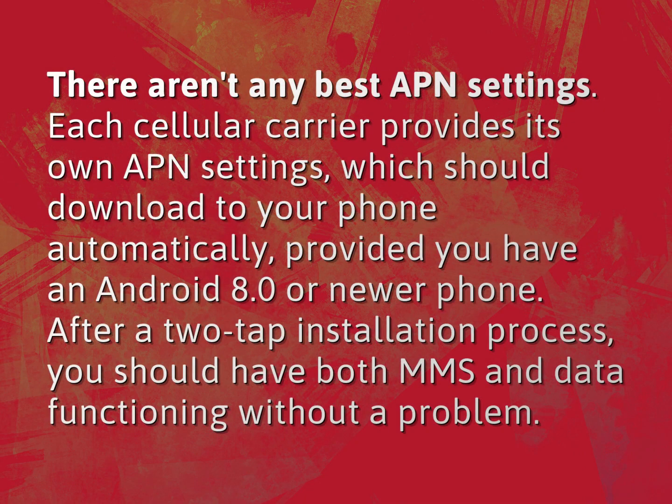Each cellular carrier provides its own APN settings, which should download to your phone automatically, provided you have an Android 8.0 or newer phone. After a two-tap installation process, you should have both MMS and data functioning without a problem.